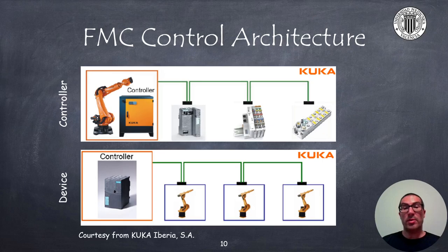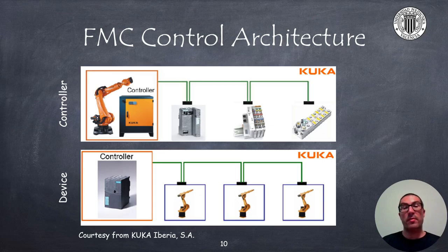Every industrial robot has an associated robot controller, which coordinates the robot's movements and handles digital signals for local process control. Industrial field buses are used when transmitting information that is more complex than simple digital signals. From a control architecture perspective, the controller can act as a controller itself, or it can act as a device being coordinated by a PLC, where the PLC coordinates the movements of multiple robots.